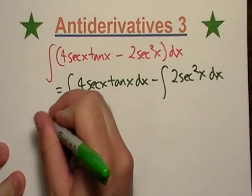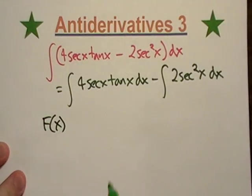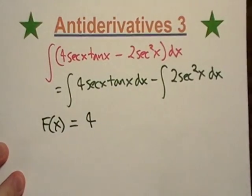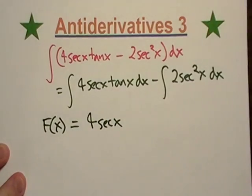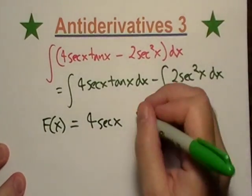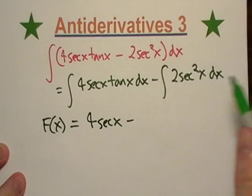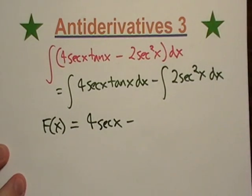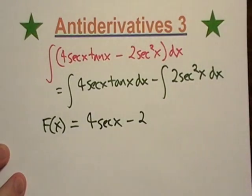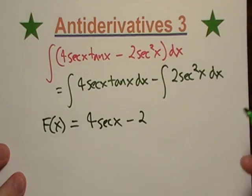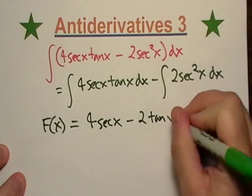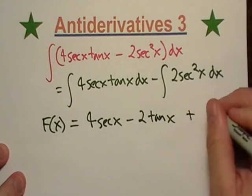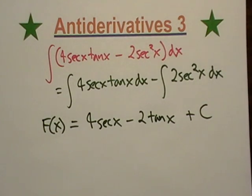So our first term of the anti-derivative, the four stays the same, but this is just secant x. And the same thing, now I'm going to integrate two times secant squared, and if I differentiate tangent, I end up with secant squared. So I'm just going to write tan x plus c.